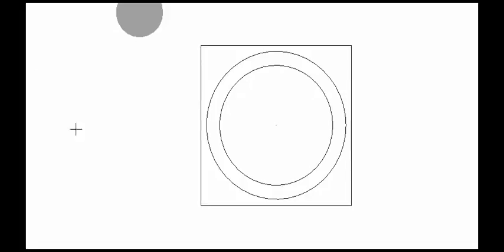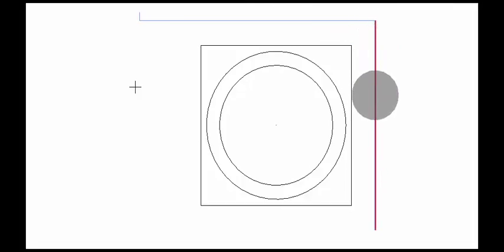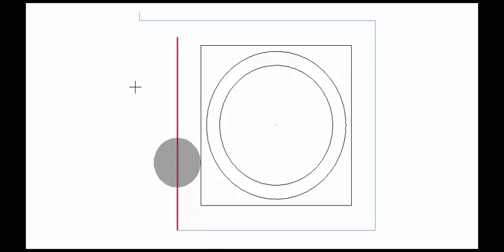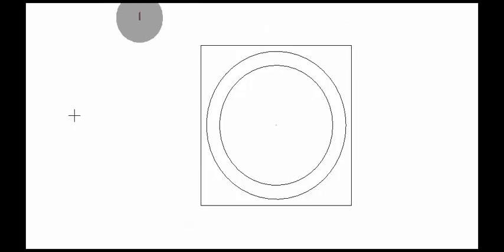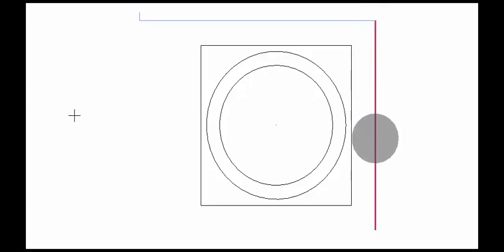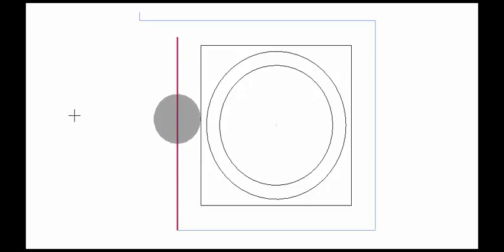Another way to remember is to pretend that this end mill, as it walks around the outside of this part, is actually you driving a car around a city block. Pretend that you're looking at it from way above. Notice how you are always on the left side of the sidewalk as you're driving around the block. So what does that mean? When we're on the outside of a part, we are driving on the left side of the sidewalk, and that will produce climb milling cutter paths.